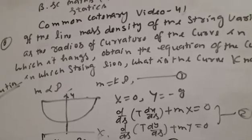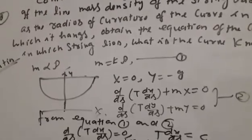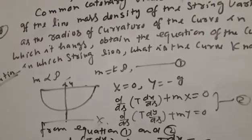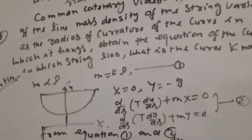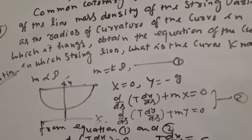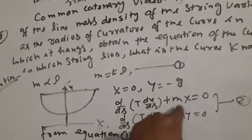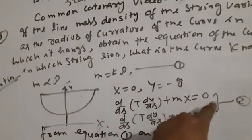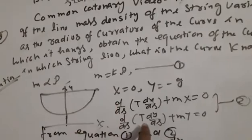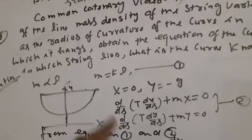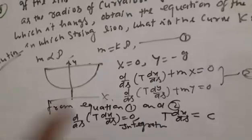Setting up the equation with boundary conditions at x equals 0, y equals 0. From equilibrium in x and y directions, the first term of this equation is d/dx of T dy/dx equal to 0.